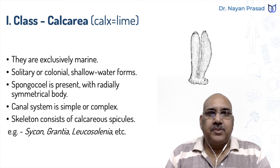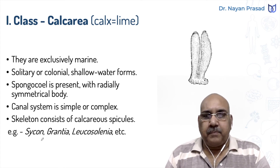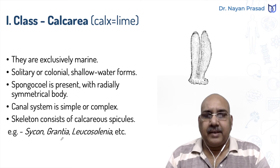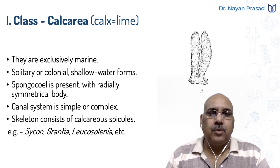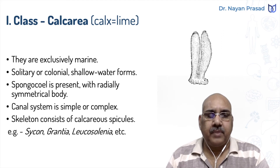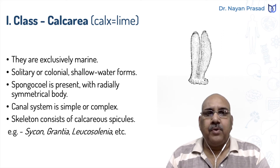Common examples of this group include Sycon, Grantia, and Leucosolenia. Here we are seeing the diagram of Sycon.